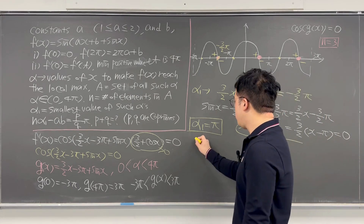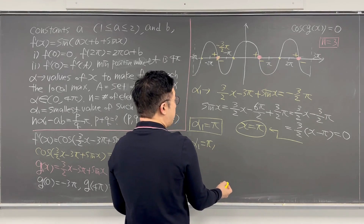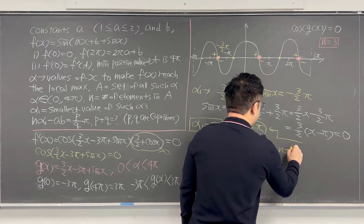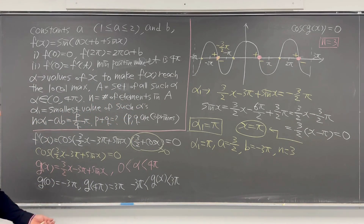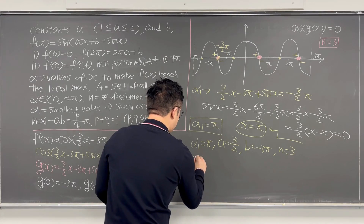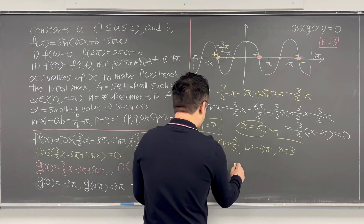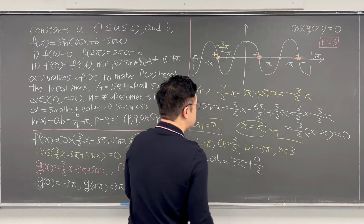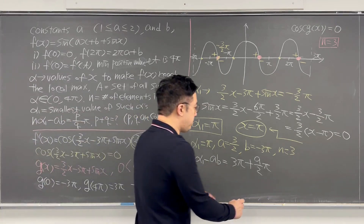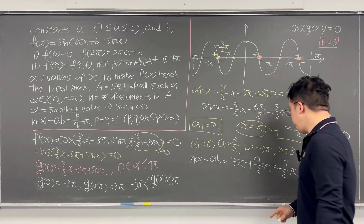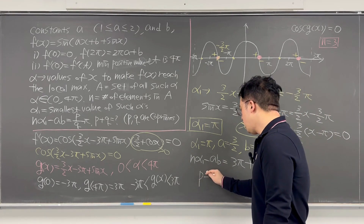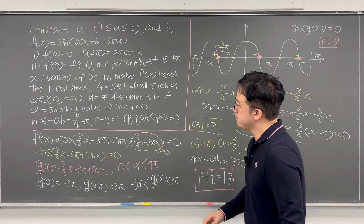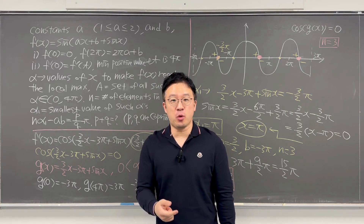Now we have everything: α₁ = π, a = 3/2, b = −3π, and n = 3. Computing n·α₁ − ab: 3·π − (3/2)·(−3π) = 3π + 9/2·π = 15/2·π. Since 15 and 2 are co-prime, p = 15 and q = 2, so p + q = 17. The answer is 17.